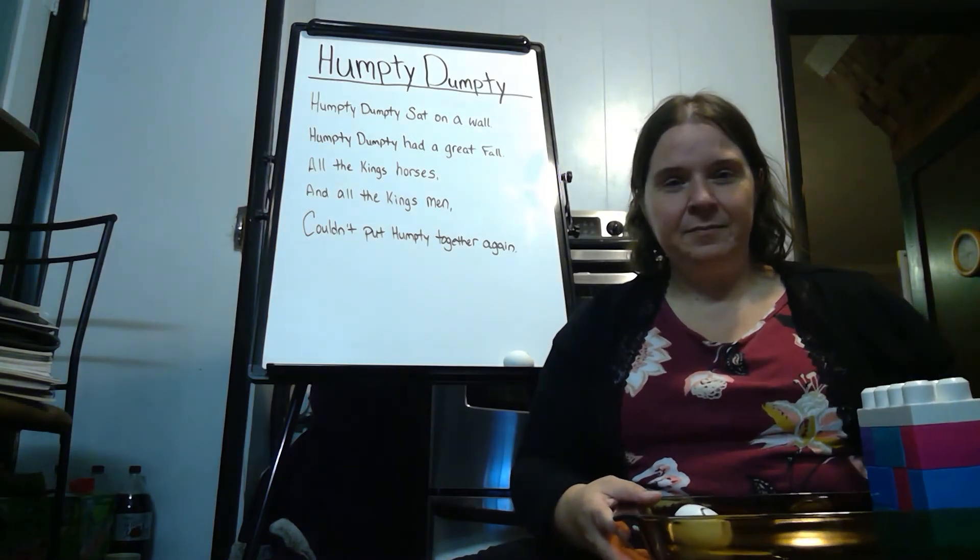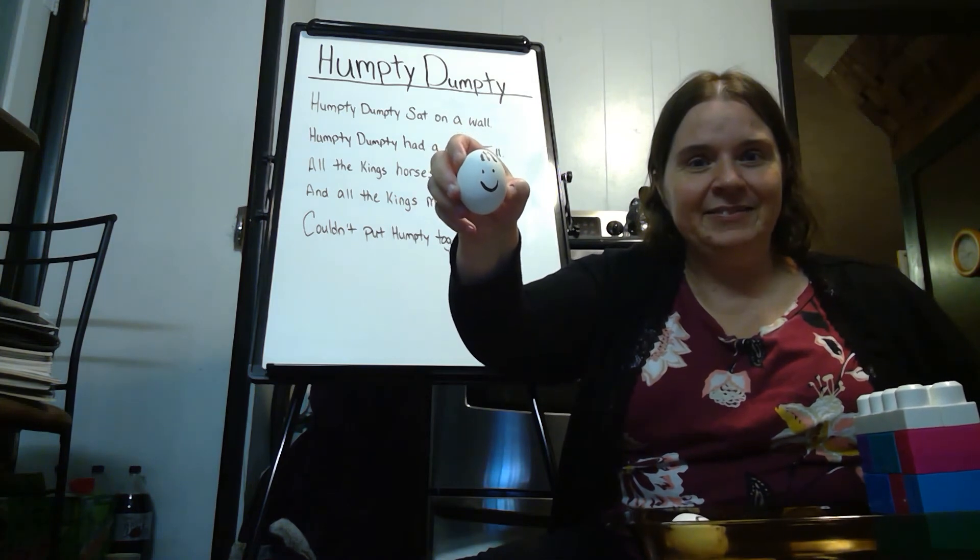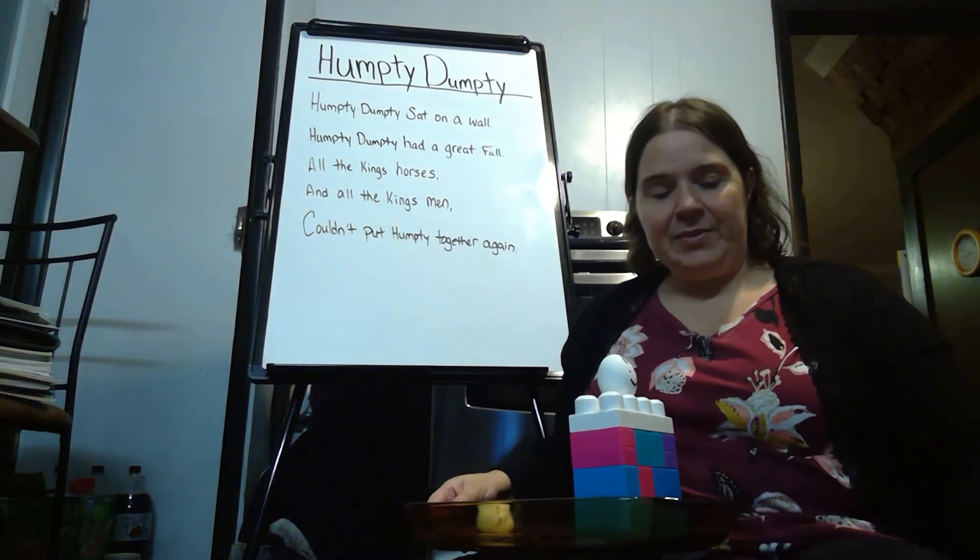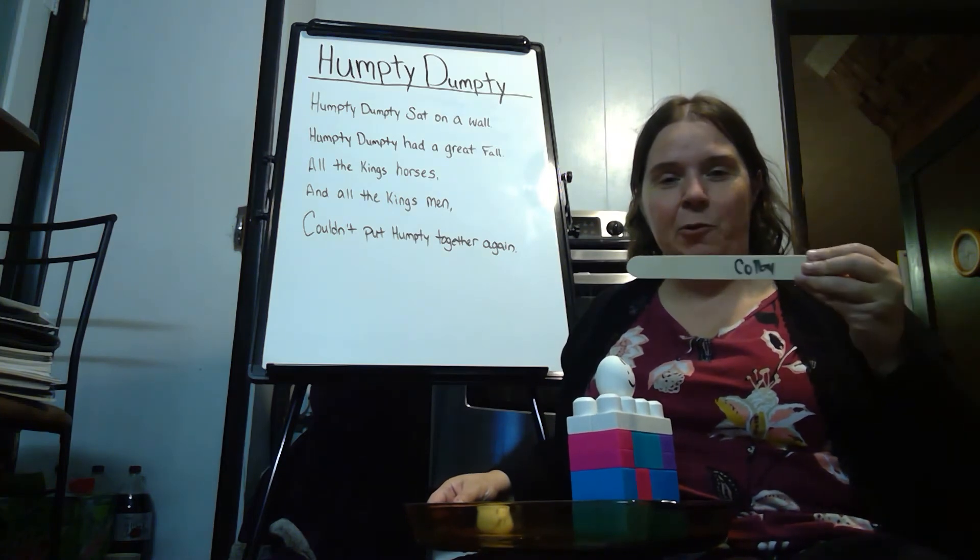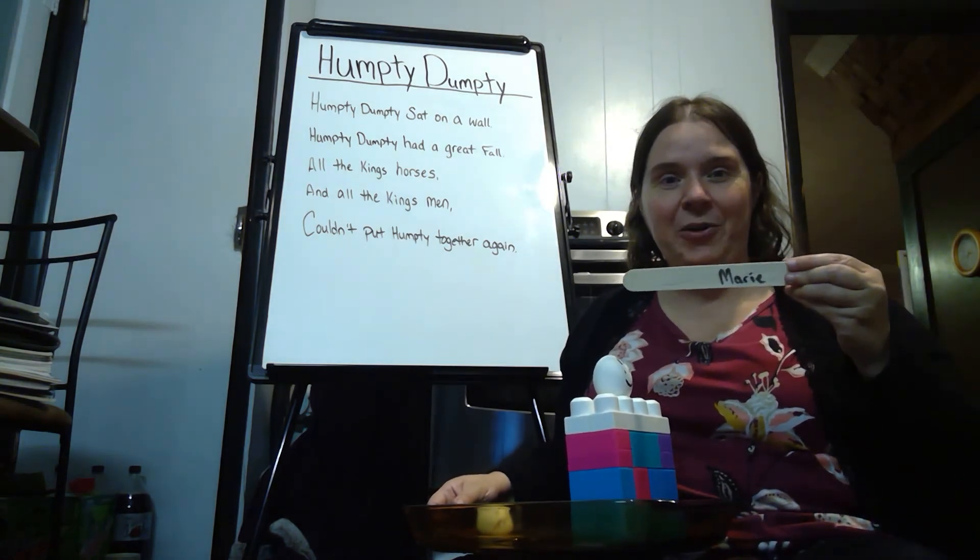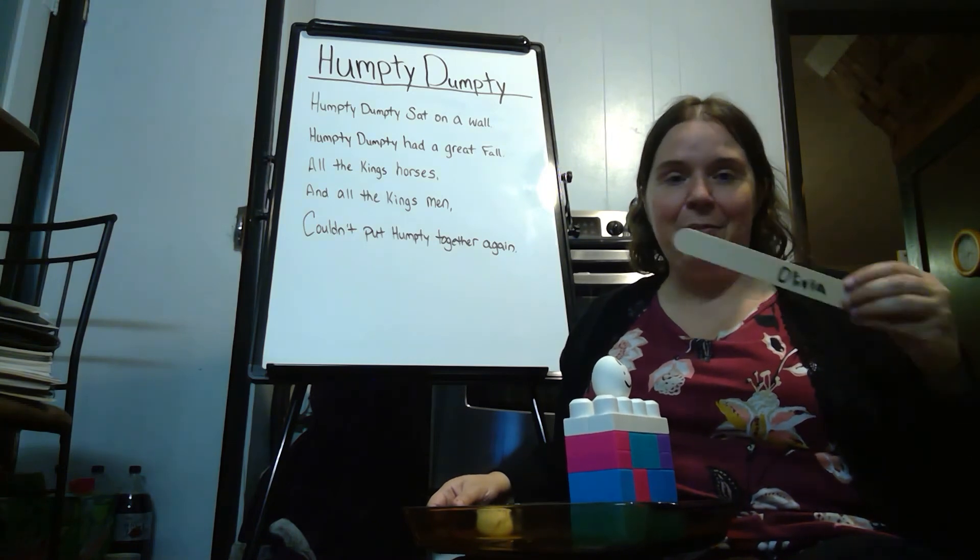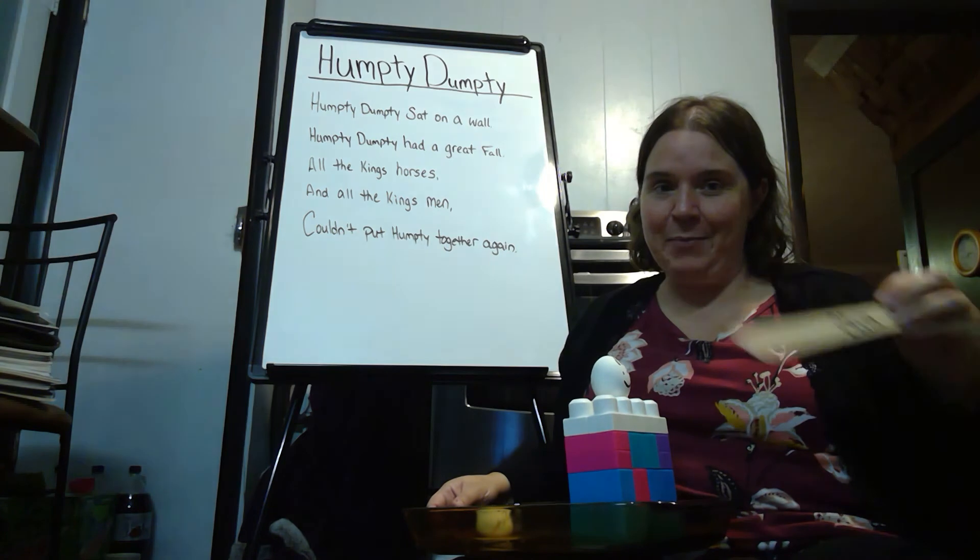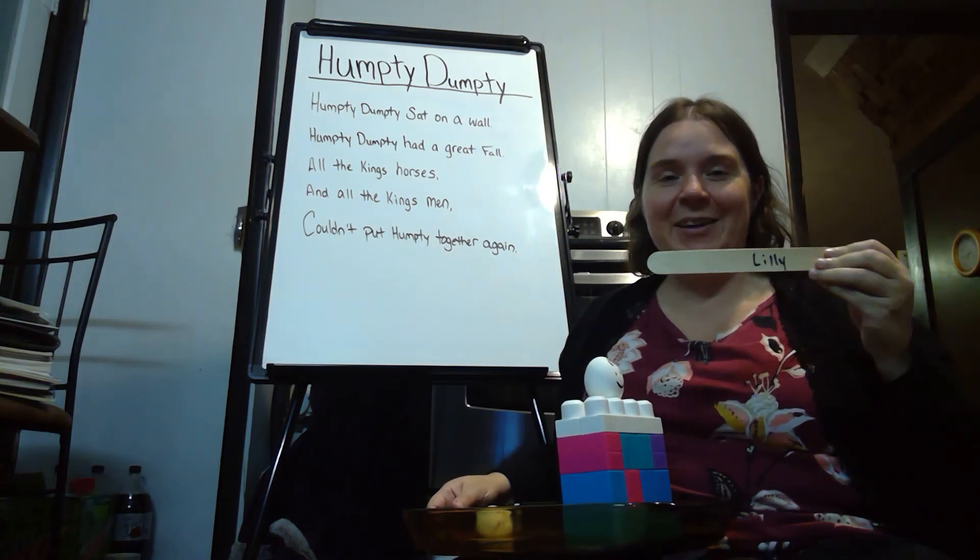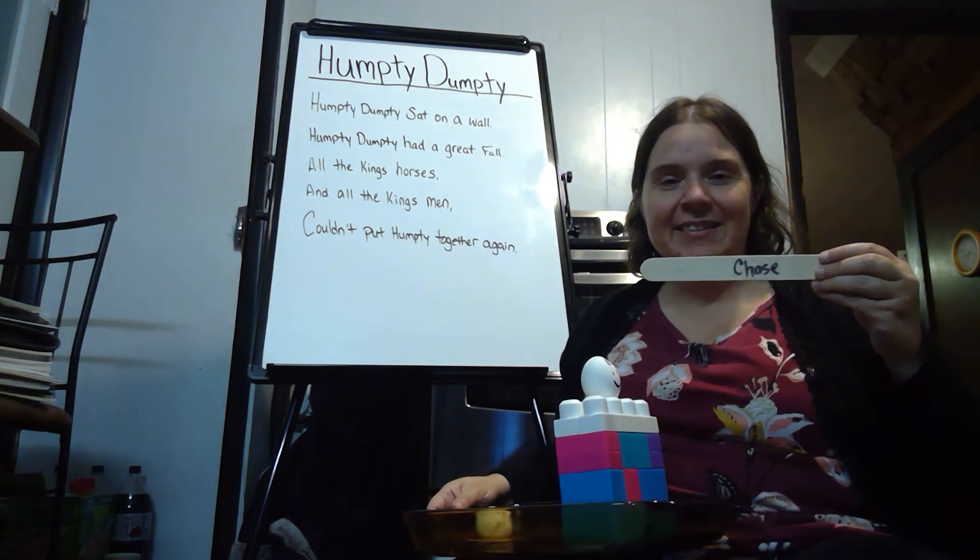Should we do it again? I think we should too. I have another egg. Here's another Humpty Dumpty. So we're going to set him on the wall. I'm going to pick some names again. What do you think is going to happen to Humpty? Colby, what do you think is going to happen? You think he's going to break? How about Marie? You think he's going to break too? How about Olivia? You think he's going to break? How about Lily? You think he's going to break? It looks like you all think he's going to break now. How about you, Chase? You think he's going to break too?